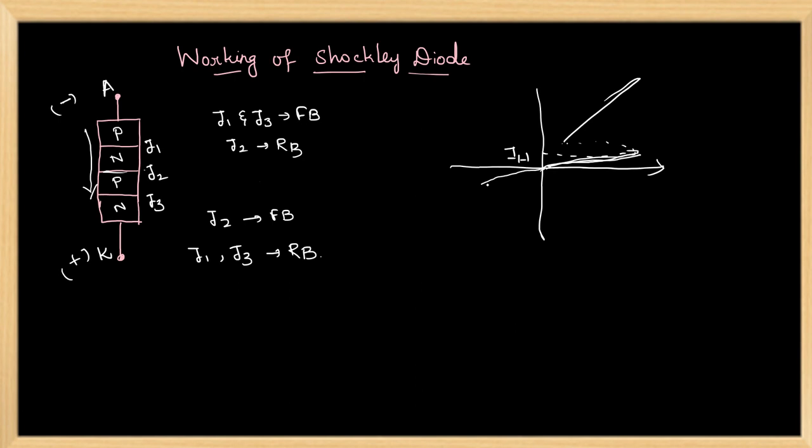If the reverse voltage is increased, J1 and J3 will undergo avalanche breakdown and reverse current increases rapidly.